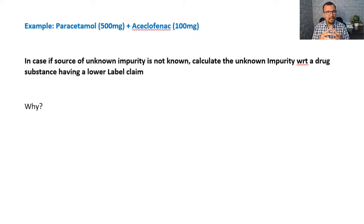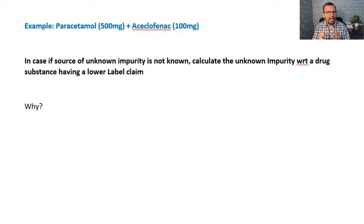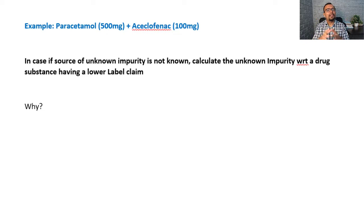Let us go back to our example: a fixed-dose combination drug product with paracetamol having a 500 mg label claim and aciclophenac with a 100 mg label claim. In case the source of the unknown impurity is not known to you, calculate the unknown impurity with respect to the drug substance having the lower label claim.